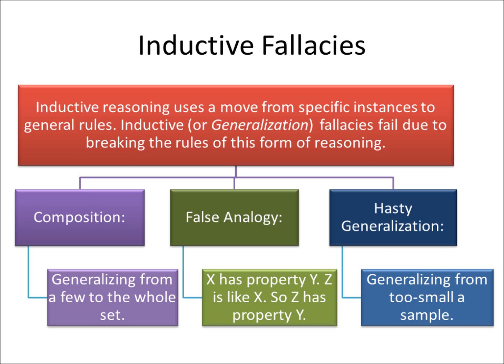The first is composition, that is where you are generalizing from a few to a whole set. Then there is false analogy. X has property Y, Z is like X, so Z has property Y. And then there is hasty generalization, generalizing from too small of a sample.